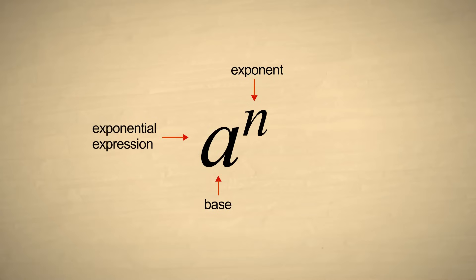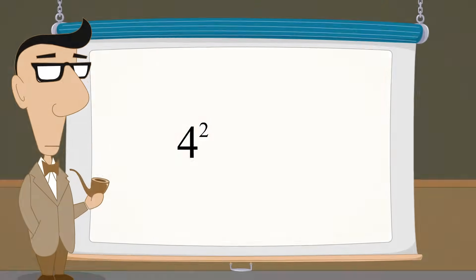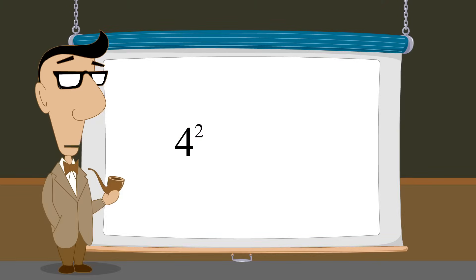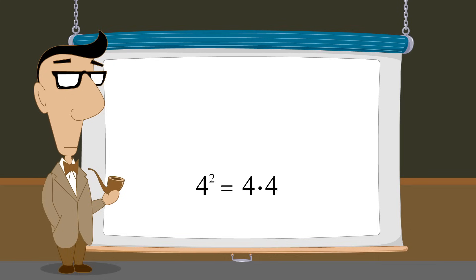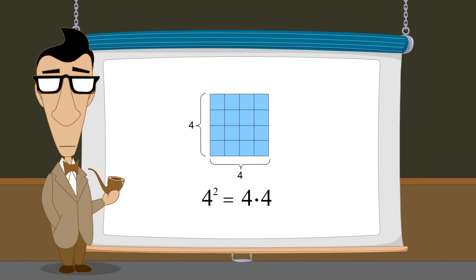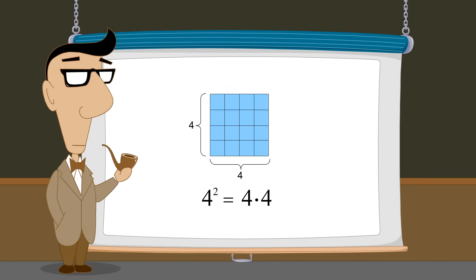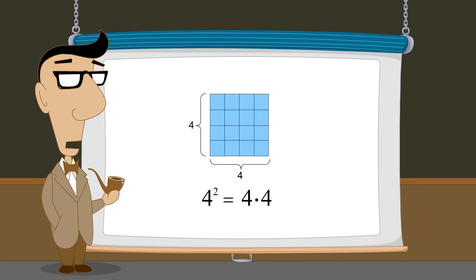For example, the exponential expression four raised to the second power is written as the number four with an exponent two written as a superscript. Since raising a number to the second power is equivalent to multiplying two copies of that number together, which is the same operation one would perform when calculating the area of a square, the number is said to be squared.